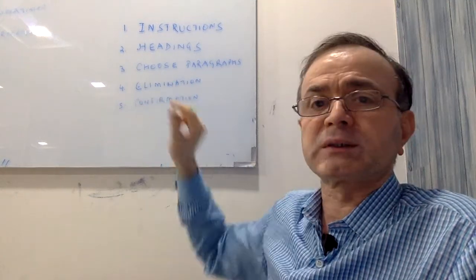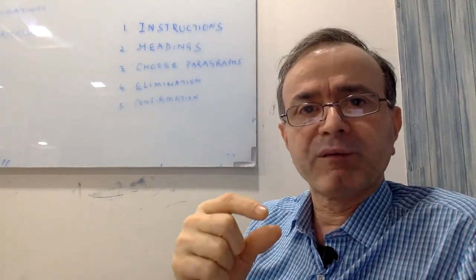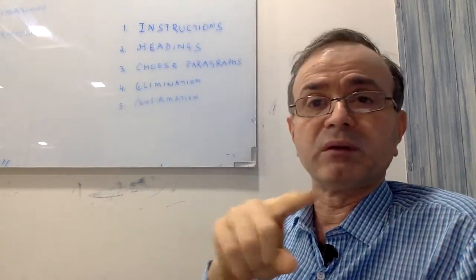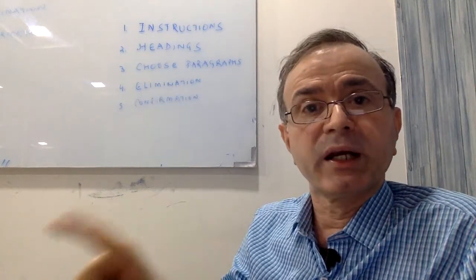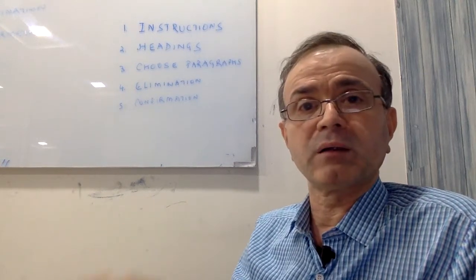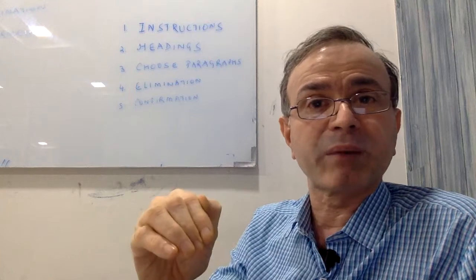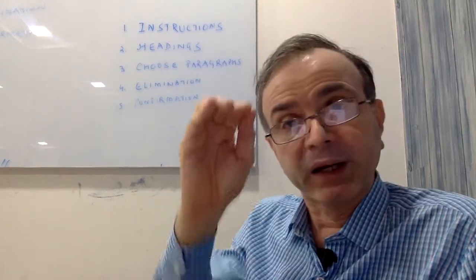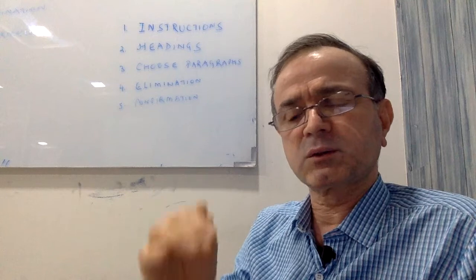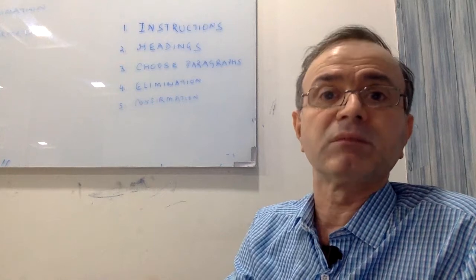Step four: read the paragraph. Say you start with paragraph D — read it, understand what it means, then look at all the headings and start eliminating them. Heading 1 doesn't match, heading 2 doesn't match, heading 3 doesn't match, heading 4 seems to match — mark it on the question paper. But don't stop there. Read all the headings and eliminate them so you are 100% sure what you've chosen is correct. Choose the one heading that just can't be eliminated.